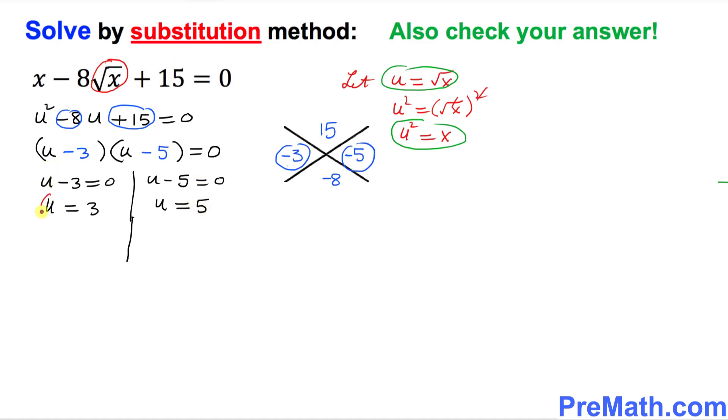But we know that u is simply square root of x. Let's go ahead and replace that one. So square root of x equal to 3. So let's square on both sides. We want to undo the square root. Let's take the square on both sides. This square and square root is gone. So x turns out to be simply 9, which is one of our solutions.